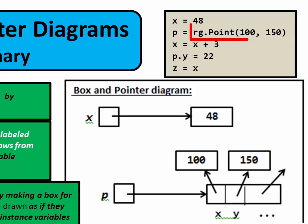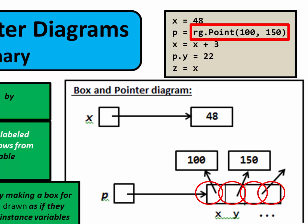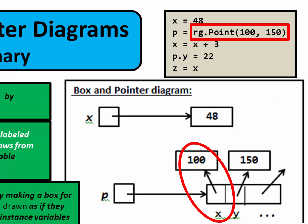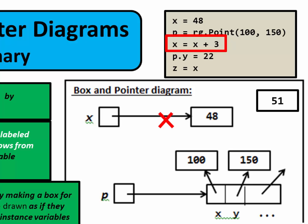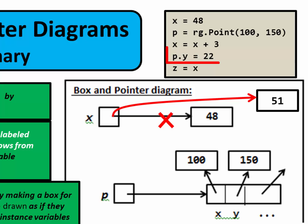For example, if we construct a point, we make sub-boxes for all its instance variables — x, y, fill color — and for each sub-box we put the instance variable name beside it and draw an arrow to the object it refers to. Rule 4: when code reassigns a variable, evaluate the right-hand side, draw a box for the new object if needed, cross through the existing arrow, and draw a new arrow to the new object. Assignment changes arrows, and arrows always go from a variable's box to an object's box.